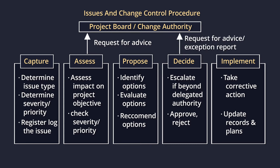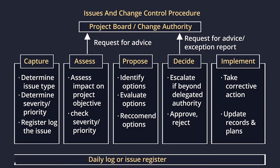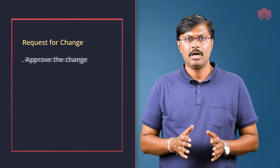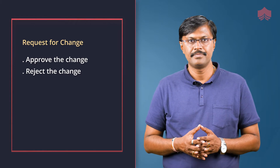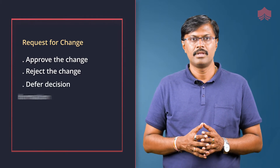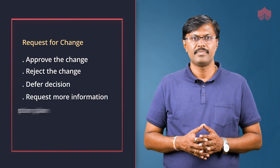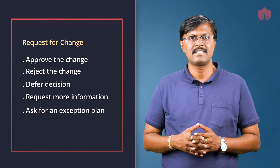During the decide step, minor issues may be resolved by the project manager. Other issues will need to be escalated to the project board. For a request for change, options are: approve the change, reject the change, defer the decision, request more information, or ask for an exception plan.